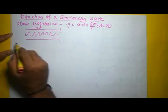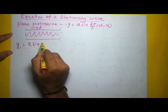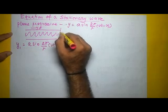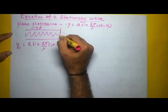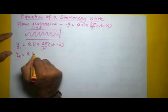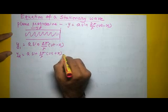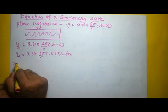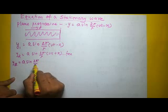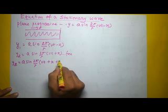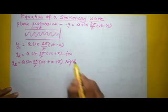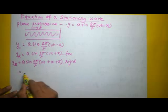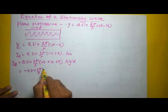The equation for the incident wave is y₁ = a sin(2π/λ)(vt − x). For the reflected wave, if we consider a free surface, the equation will be y₂ = a sin(2π/λ)(vt + x). But if it is a rigid boundary, the equation becomes y₂ = a sin(2π/λ)(vt + x) + π, because a phase difference of π is introduced. Therefore I can write this as y₂ = −a sin(2π/λ)(vt + x).